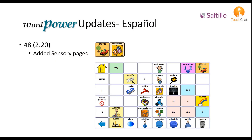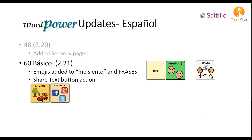The 48 Location Español file now includes the sensory pages. The sensory pages were already added to the 48 and 60 BOSICO files in a previous update. Emojis are added to the me siento and phrases pages.